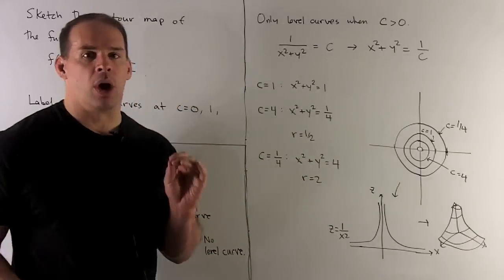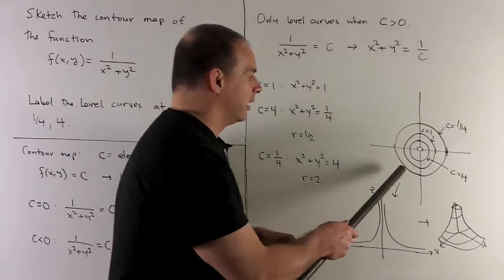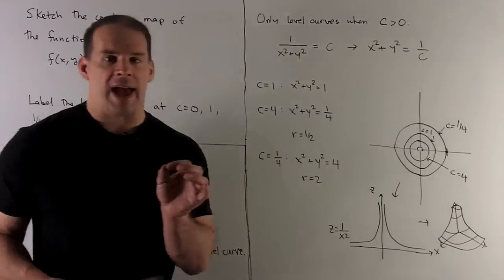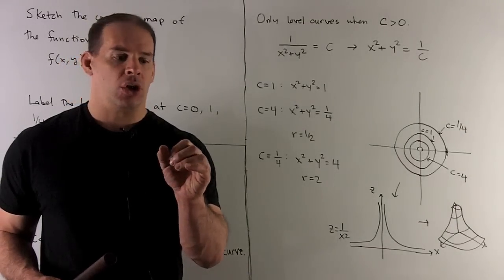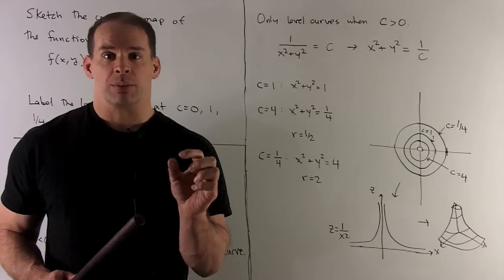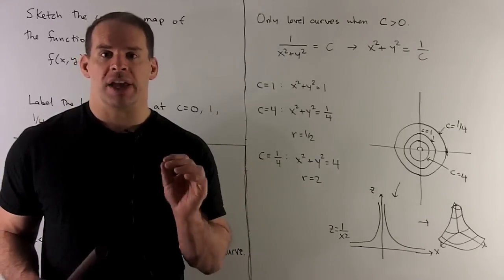And then for c = 1/4, we're going to have radius equal to 2, so that'll be this big circle out here. What do you notice? As c gets large, the radii of my circles are going to get smaller and smaller. As c gets small, the radii of the circles get larger and larger.